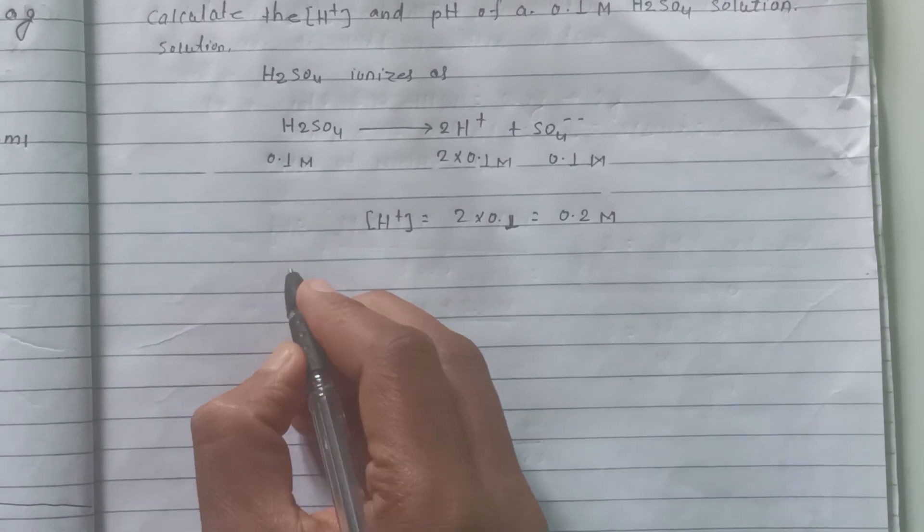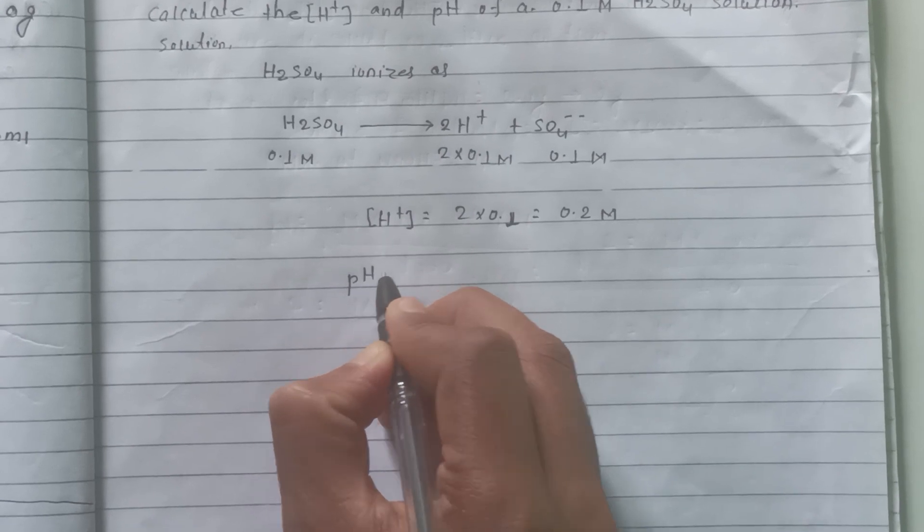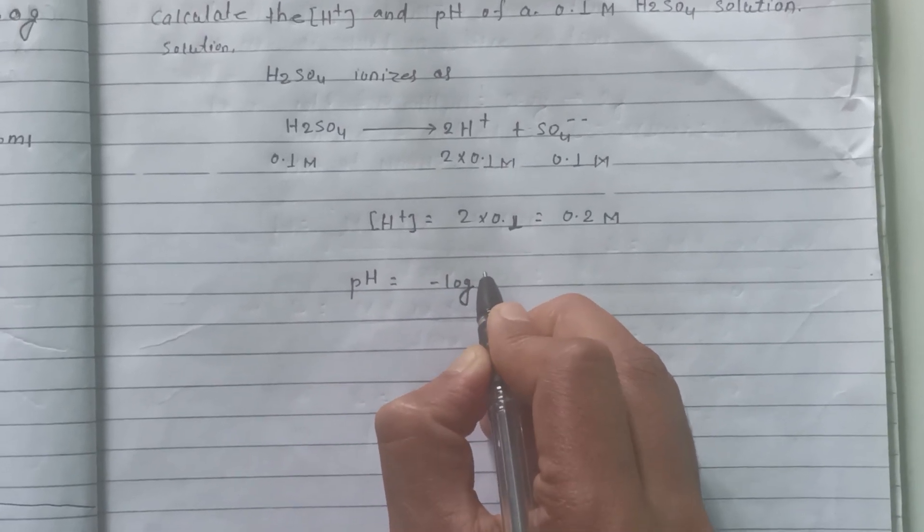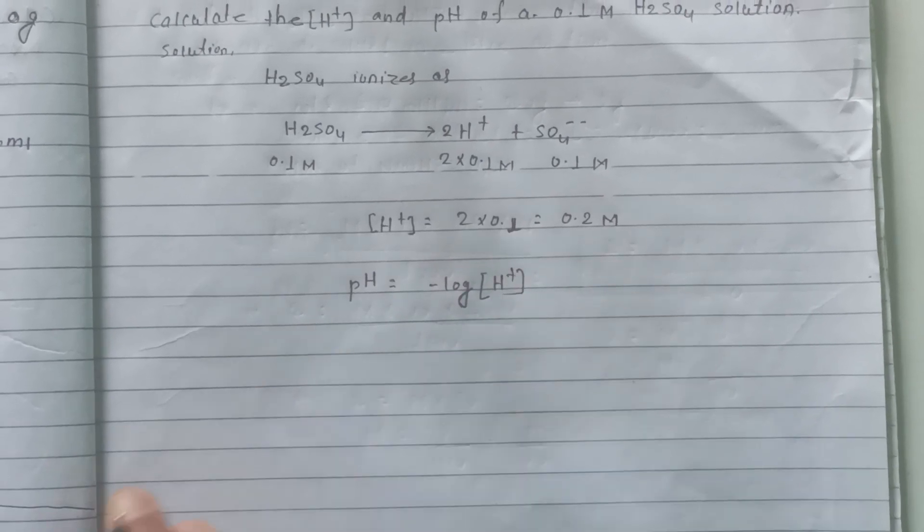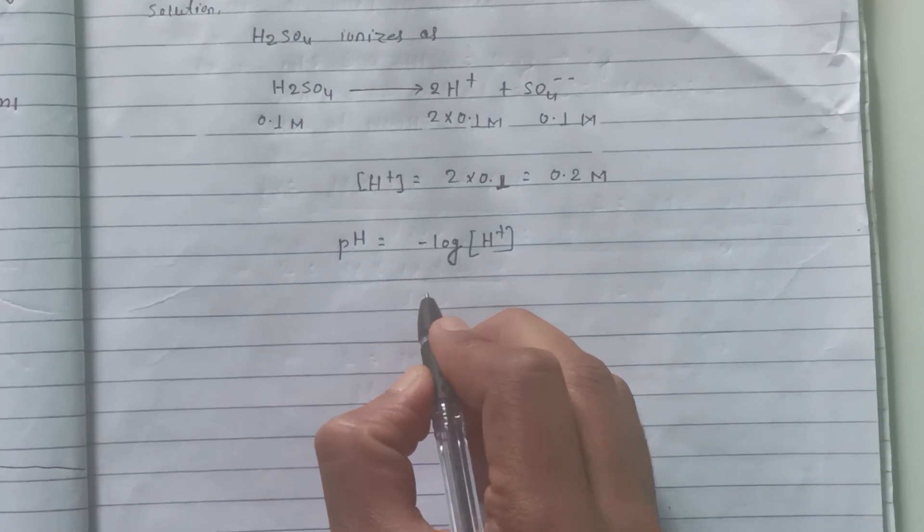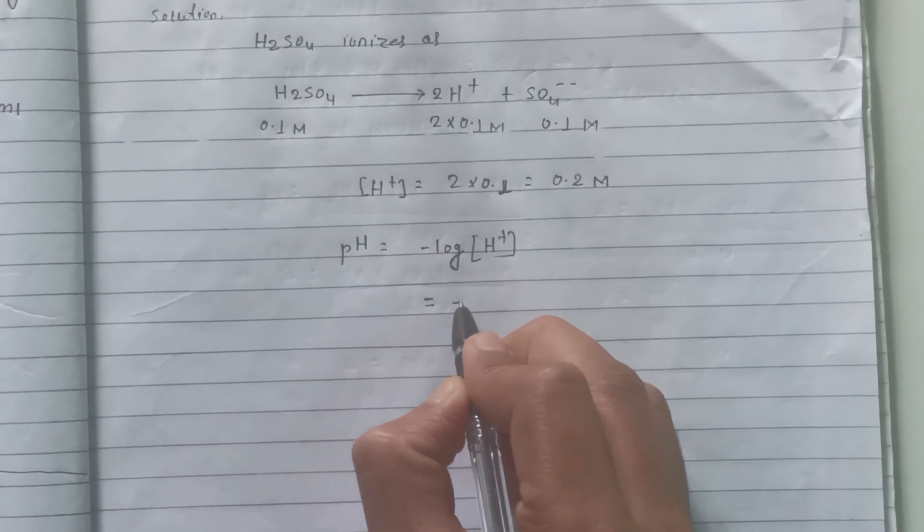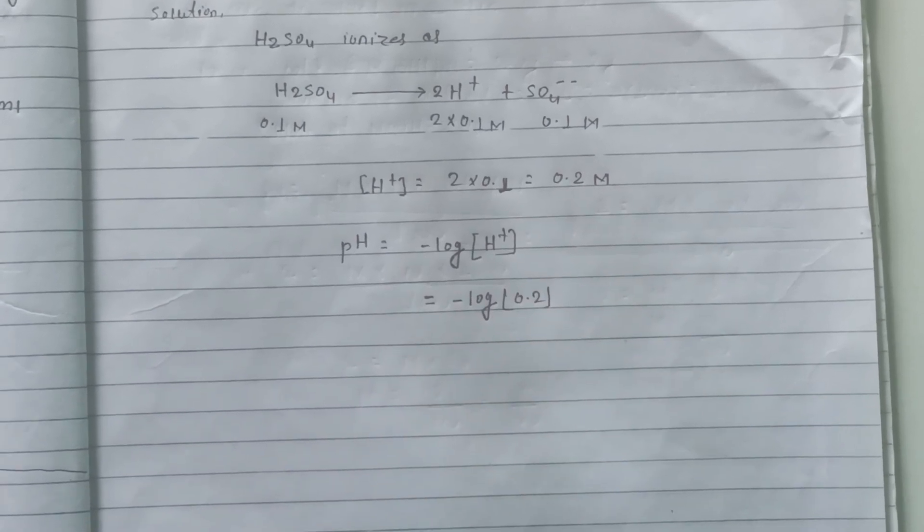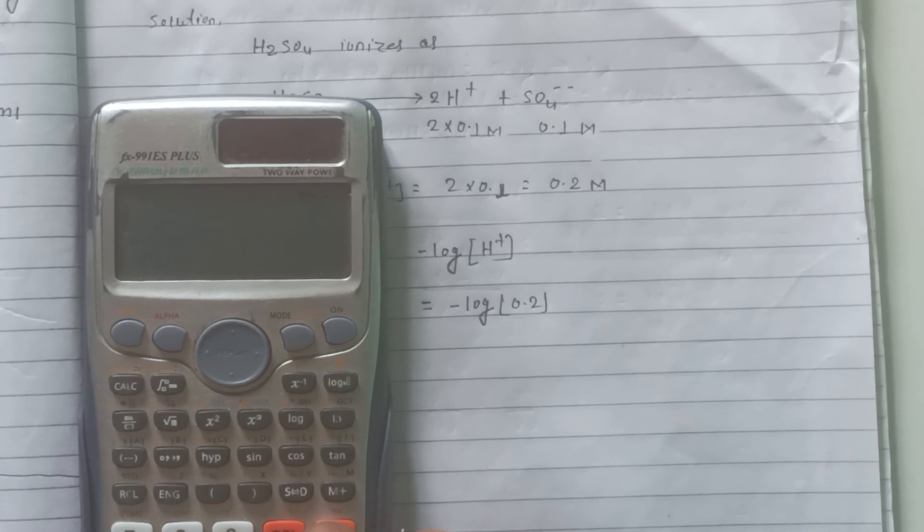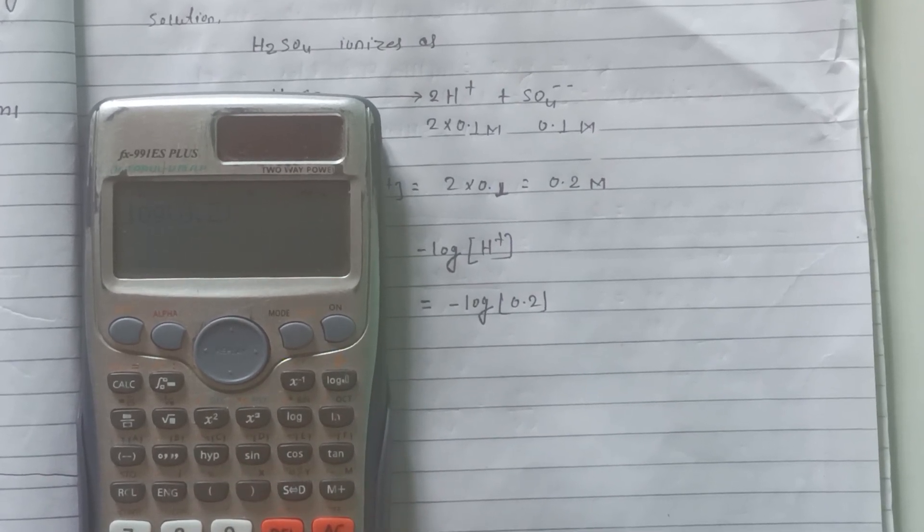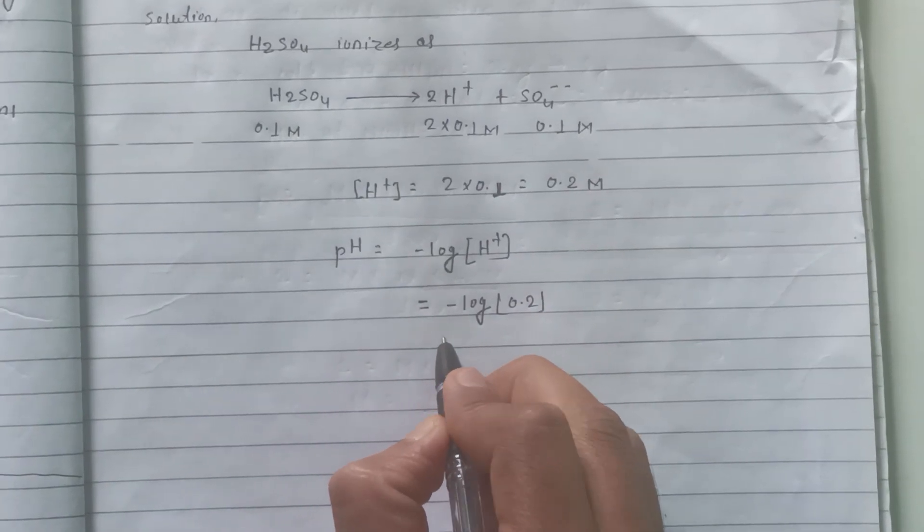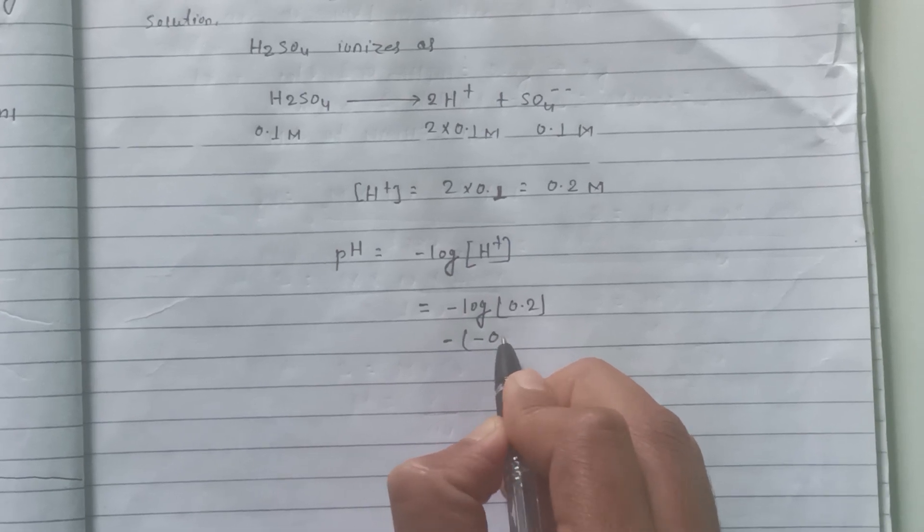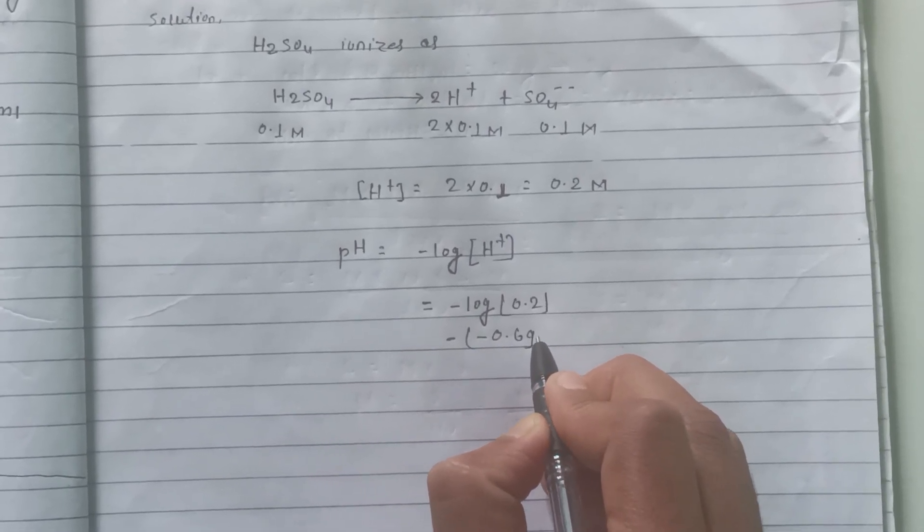Now, pH of sulfuric acid solution. pH equals -log[H+] = -log(0.2) = 0.698.